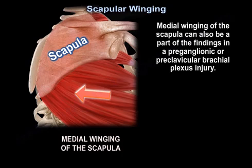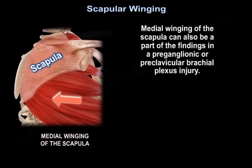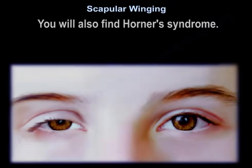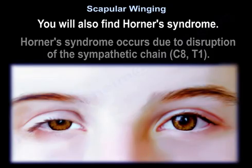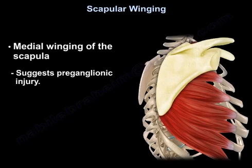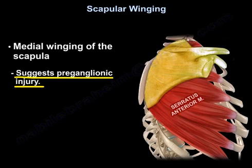Medial winging of the scapula can also be part of the findings in a preganglionic or preclavicular brachial plexus injury. You will also find Horner's syndrome. The Horner's syndrome occurs due to disruption of the sympathetic chain C8-T1. The medial winging of the scapula will suggest preganglionic injury.